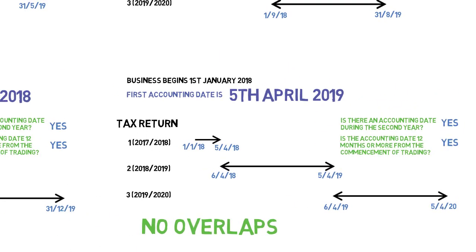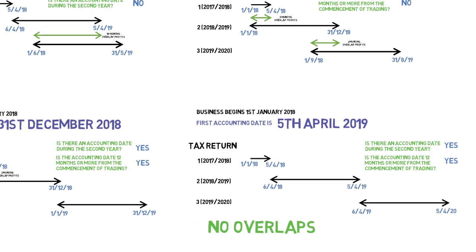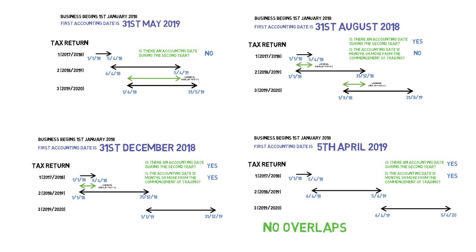To summarise: if you choose an accounting date that does not align with the tax year, you'll need to budget for overlap profits, which could negatively affect your cash flow during those early years. You can claim that back through overlap relief, but not until you cease trading, which might not be for several years to come. The only way to avoid any overlap profits is to have an accounting date that matches the tax year.